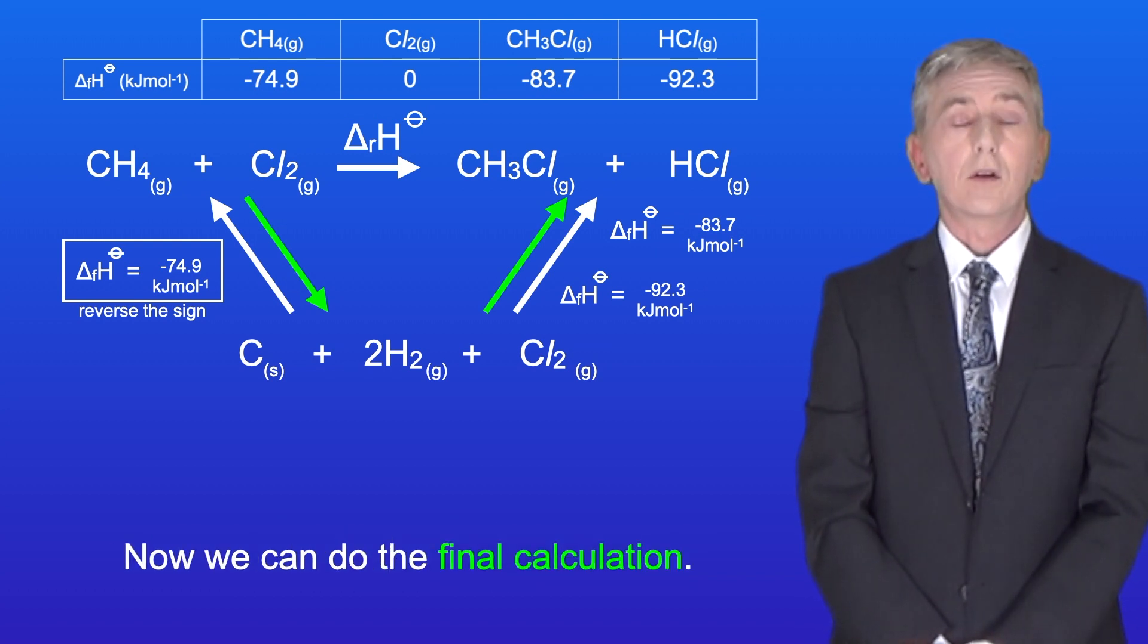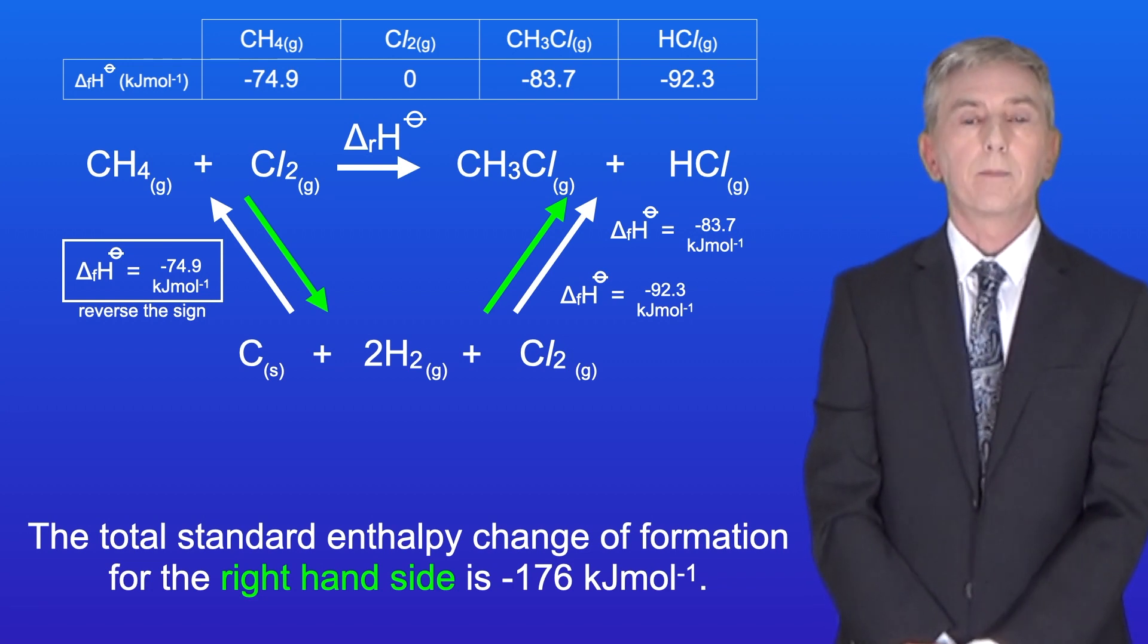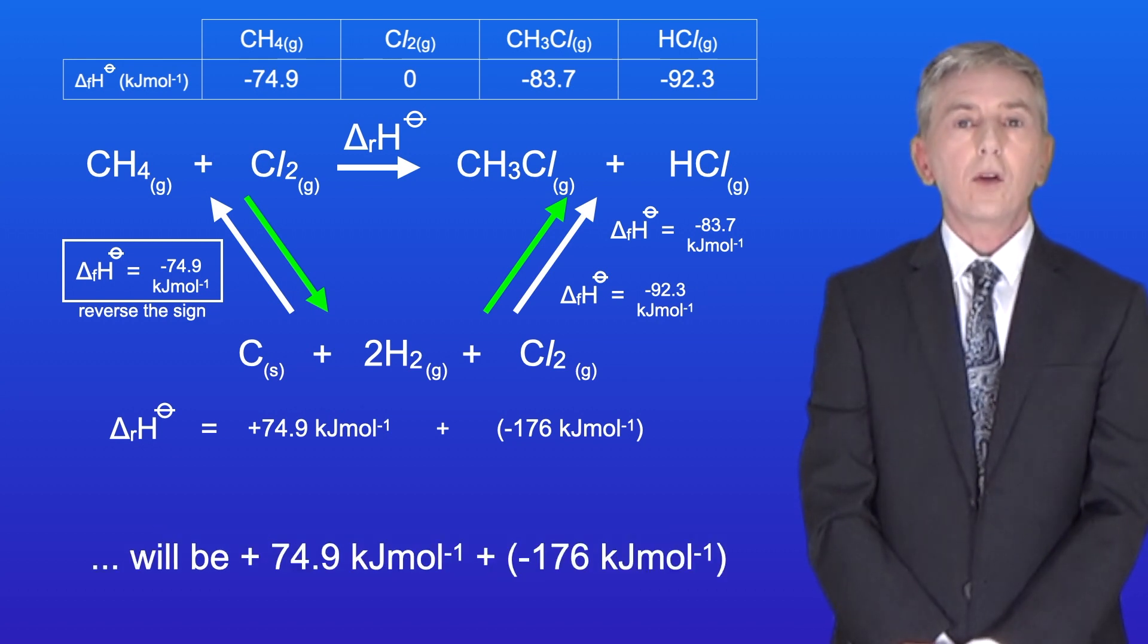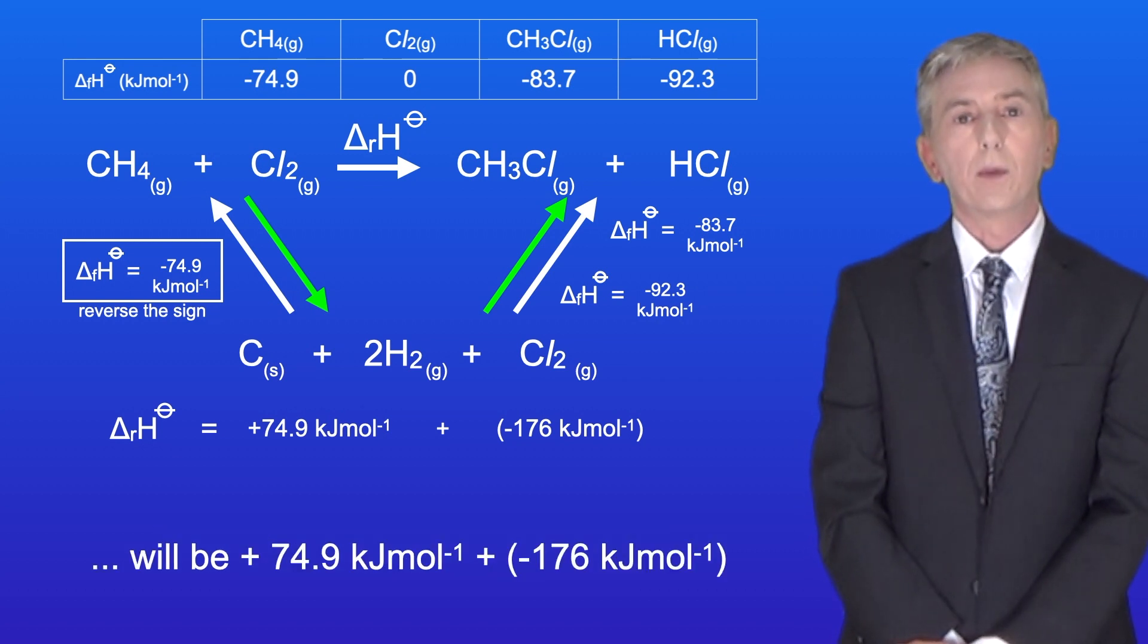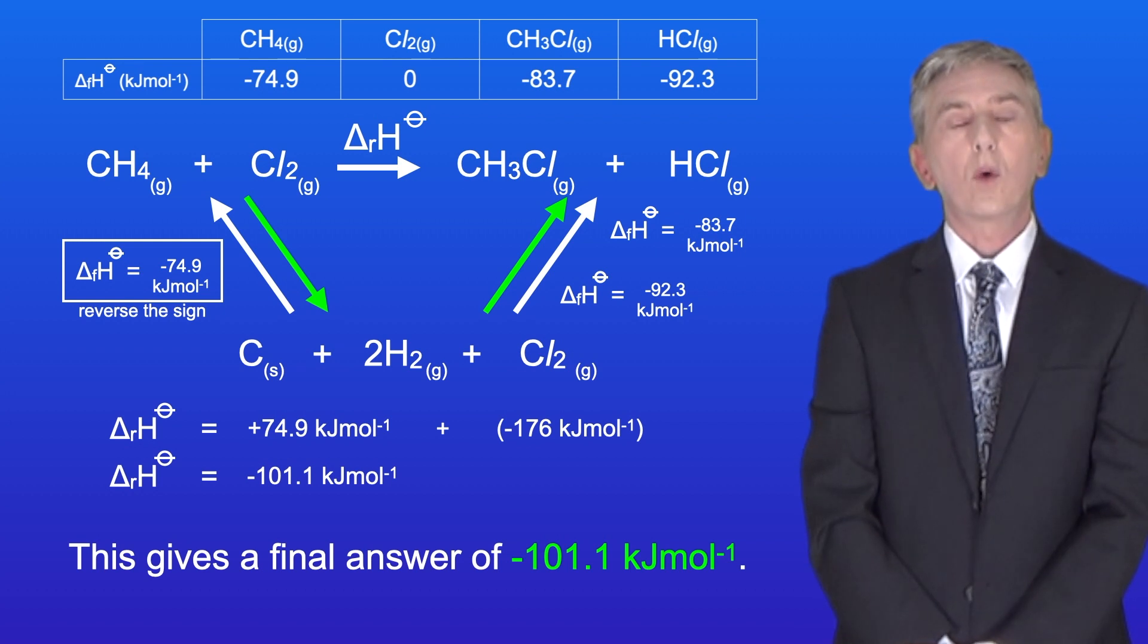Okay, so now we can do the final calculation. The total standard enthalpy change of formation for the right-hand side is minus 176 kilojoules per mole. Therefore, the standard enthalpy change of reaction will be plus 74.9 kilojoules per mole, plus minus 176 kilojoules per mole. This gives us a final answer of minus 101.1 kilojoules per mole.